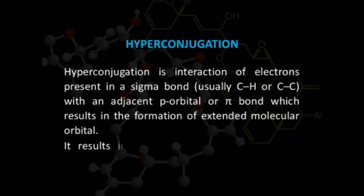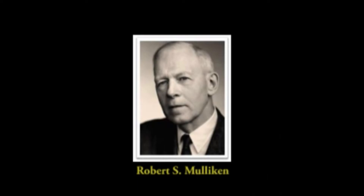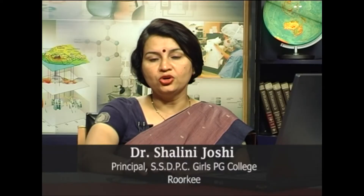This interaction results in the decrease of energy of the system, and therefore the system becomes stable. The term hyperconjugation was introduced in 1939 by Robert S. Mulliken when he was working on UV spectroscopy of conjugated molecules.